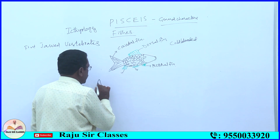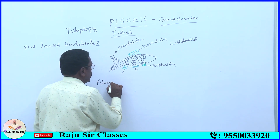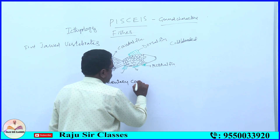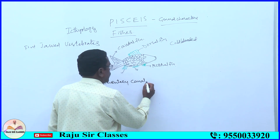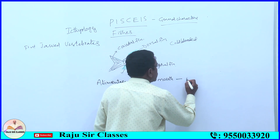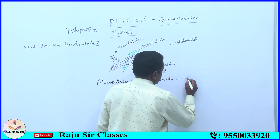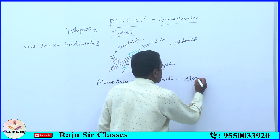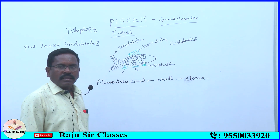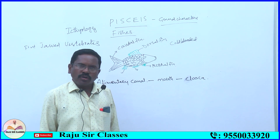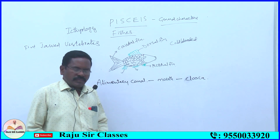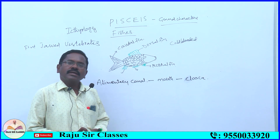In fishes, the alimentary canal starts with the mouth and ends with the cloaca. Anus is absent; cloaca is a common aperture — aperture means pore. So the alimentary canal starts with mouth and ends with cloaca.